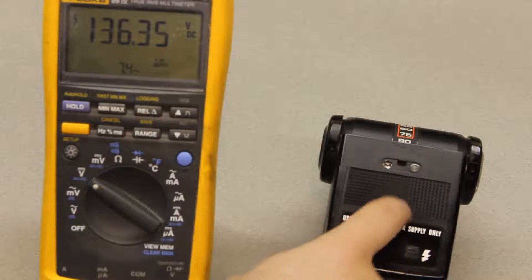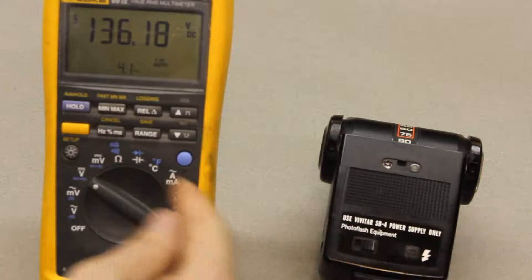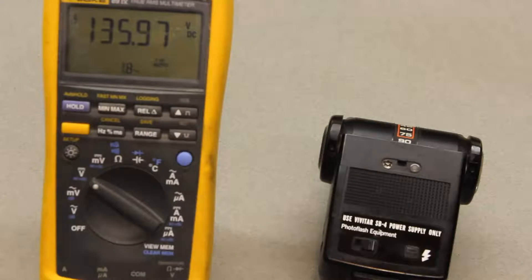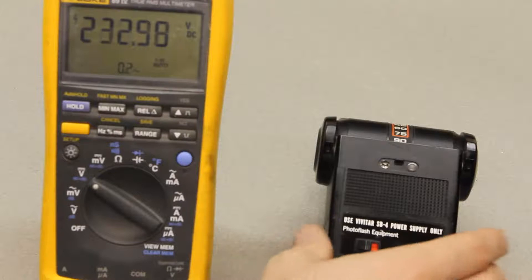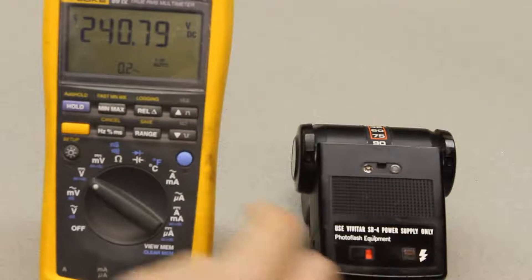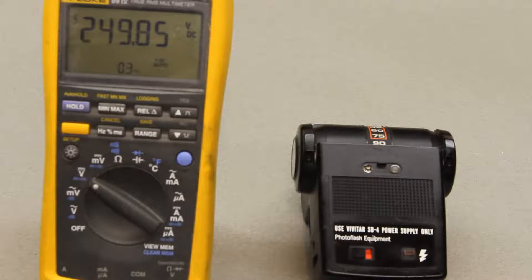This is the high voltage Vivitar, and you can see that just sitting there it was at 136 volts. When I turn it on it'll go to an even higher voltage, so it's over 200 volts now. It's now ready to trigger it says, but its voltage is still climbing. I think it'll stabilize around there, so that's 250 to 260 volts. That's a lot more than the camera axe can handle.